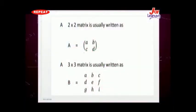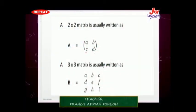A 2x2 matrix is usually written as A equals the matrix with entries A, B, C, and D. Here A is the first row, first column entry; B is the first row, second column entry; C is the second row, first column entry; and D is the second row, second column entry.